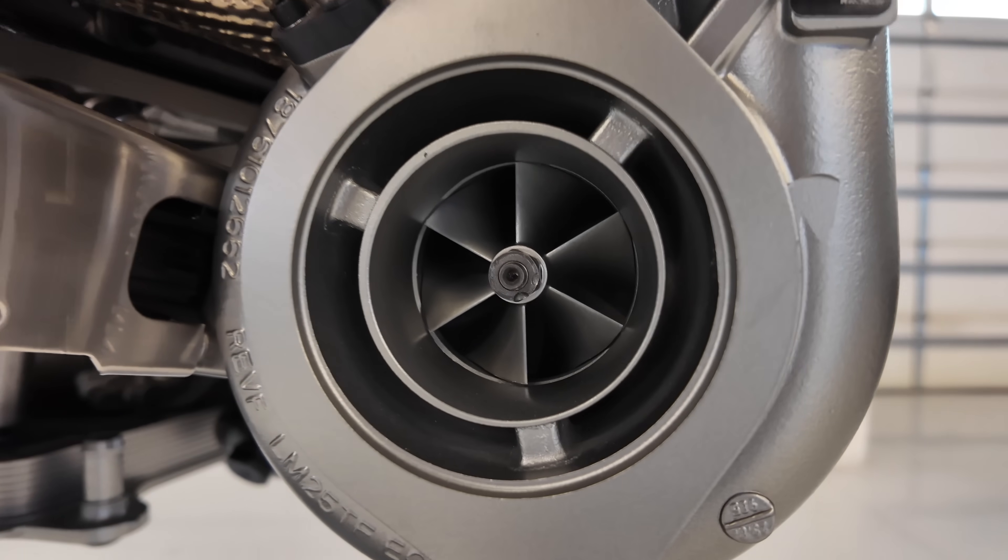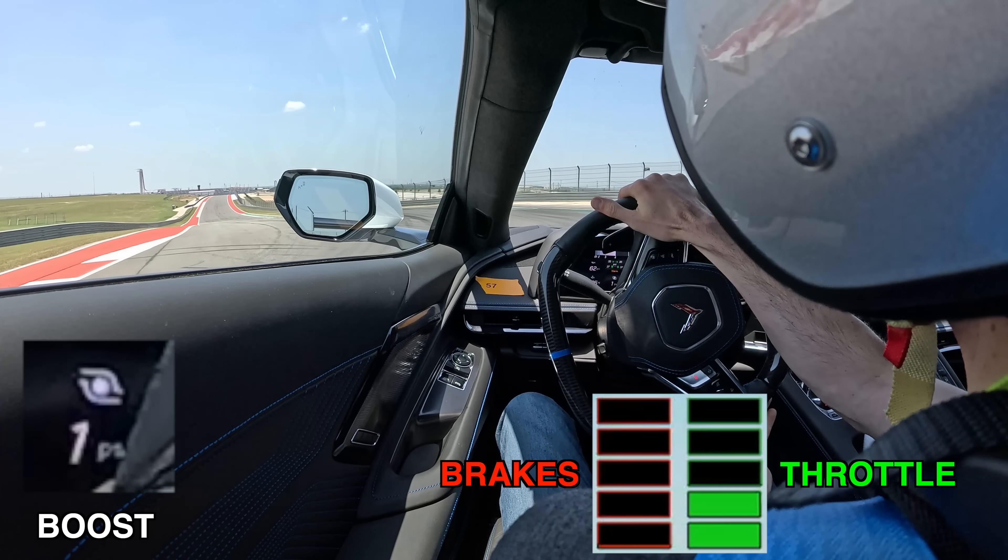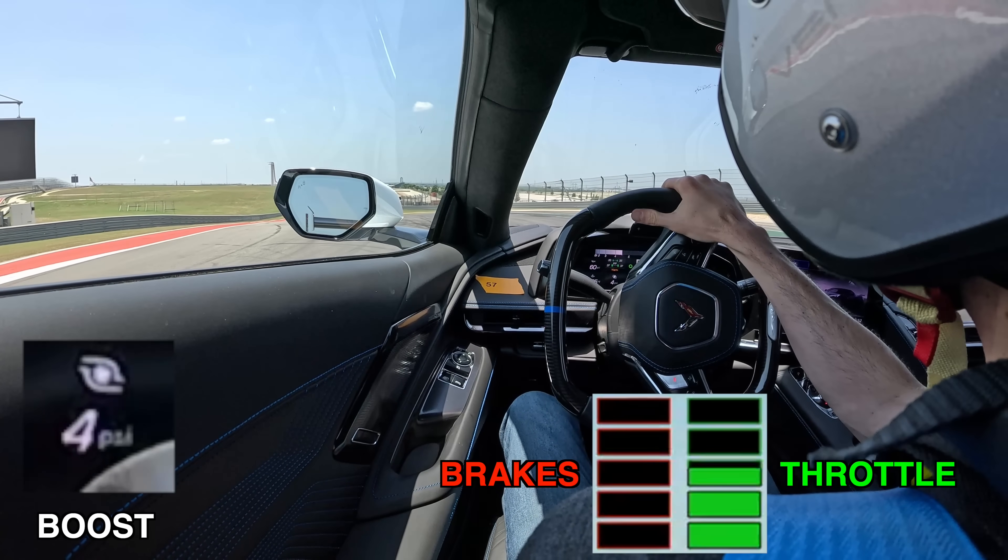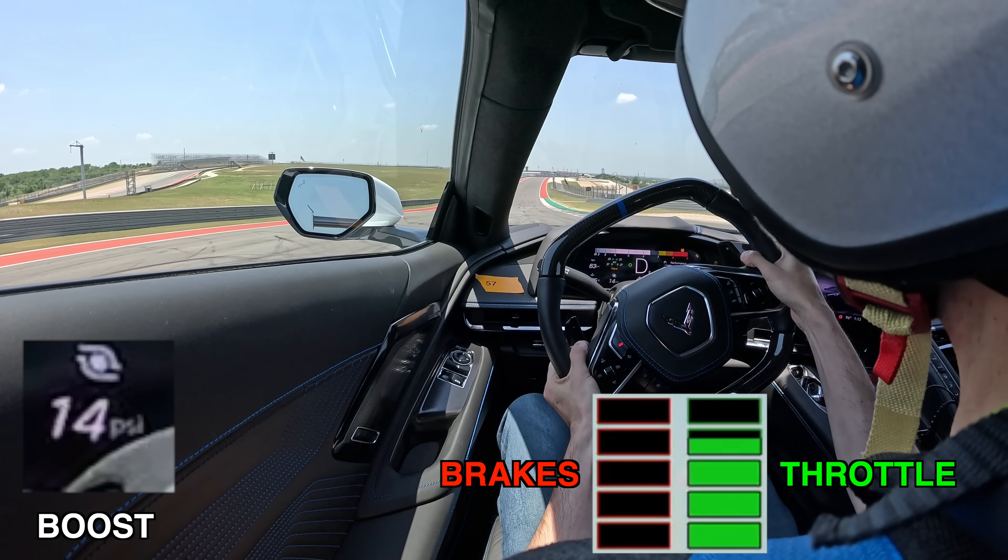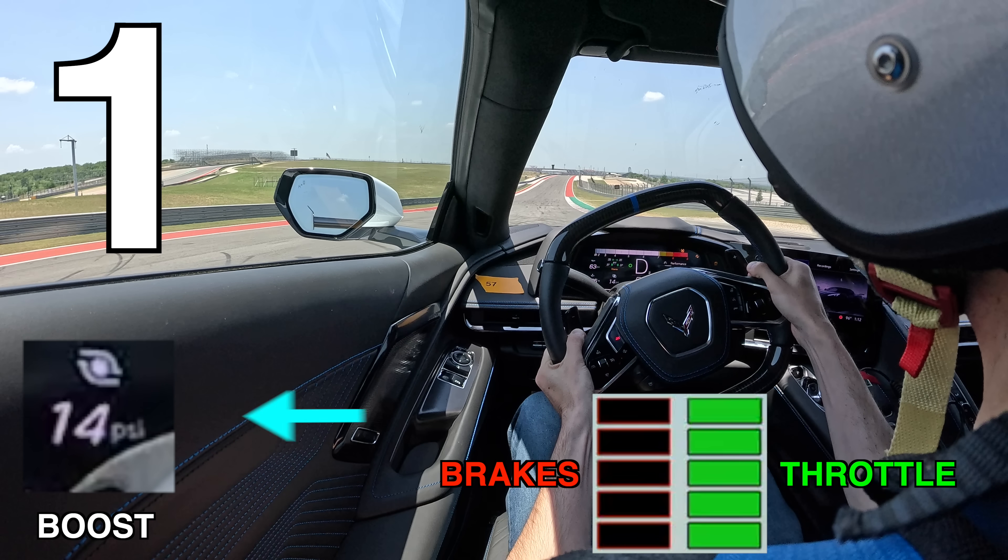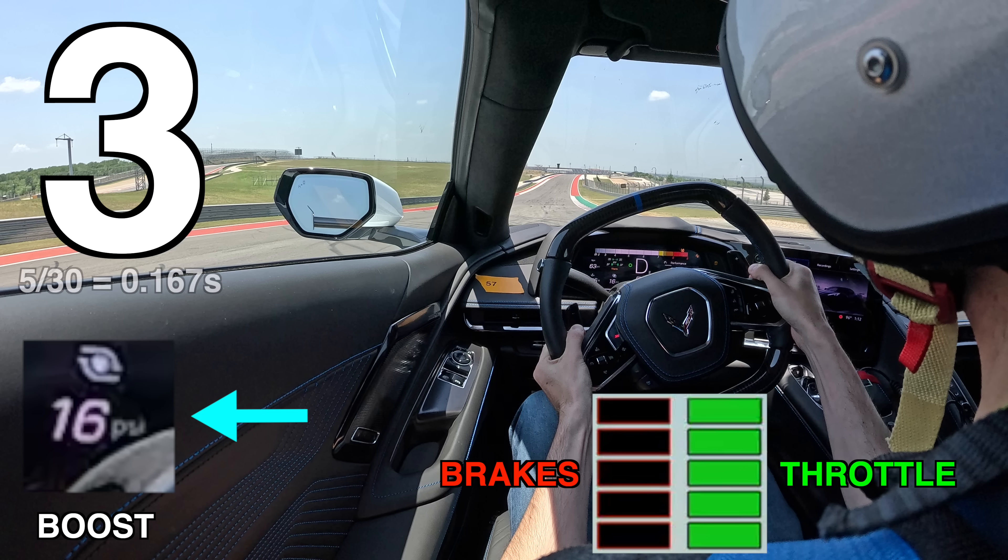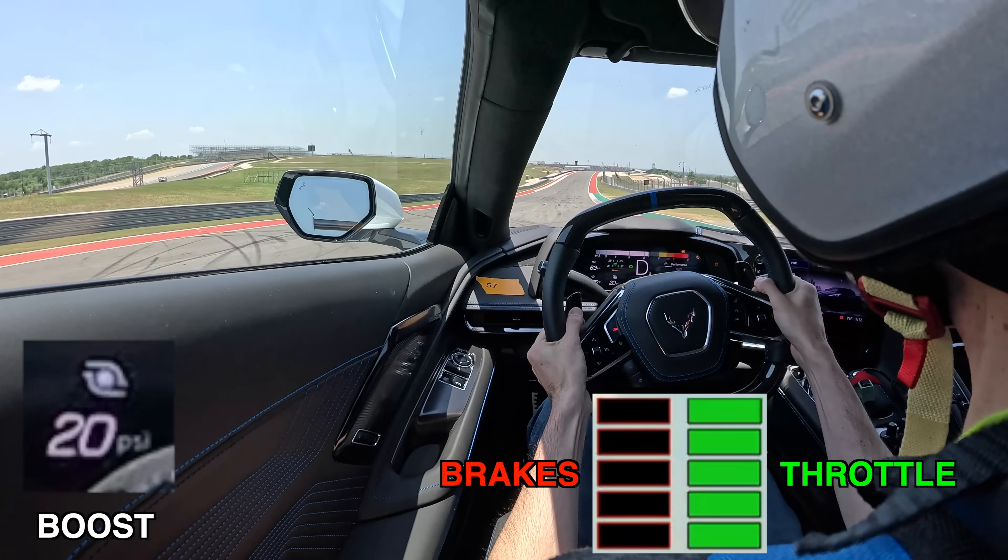But again, there's still momentum in that turbine wheel. So as I ease back onto the throttle on corner exit, of course there's no point in flooring it just yet, the boost builds. And by the time I've finally given it full throttle in second gear, you can see boost pressure is already at 14 psi. And just 5 frames of video later, less than two-tenths of a second, I'm at 21 psi. Full boost.